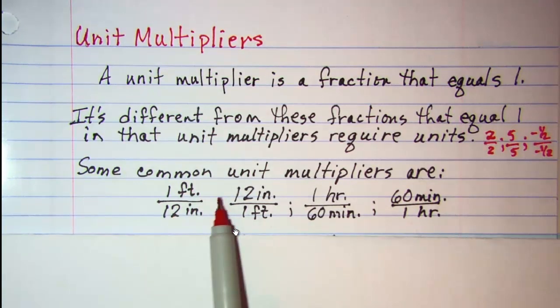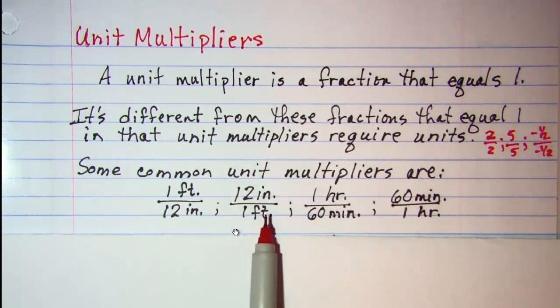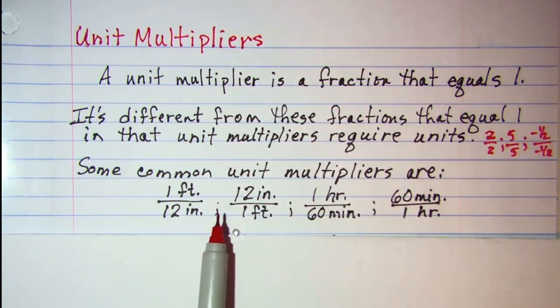So notice here one foot over 12 inches and then 12 inches over one foot. Both of these are unit multipliers and you'll use whichever one benefits you. So if you need the inches in the numerator you'll use this one. If you need the inches in the denominator you'll use this one.